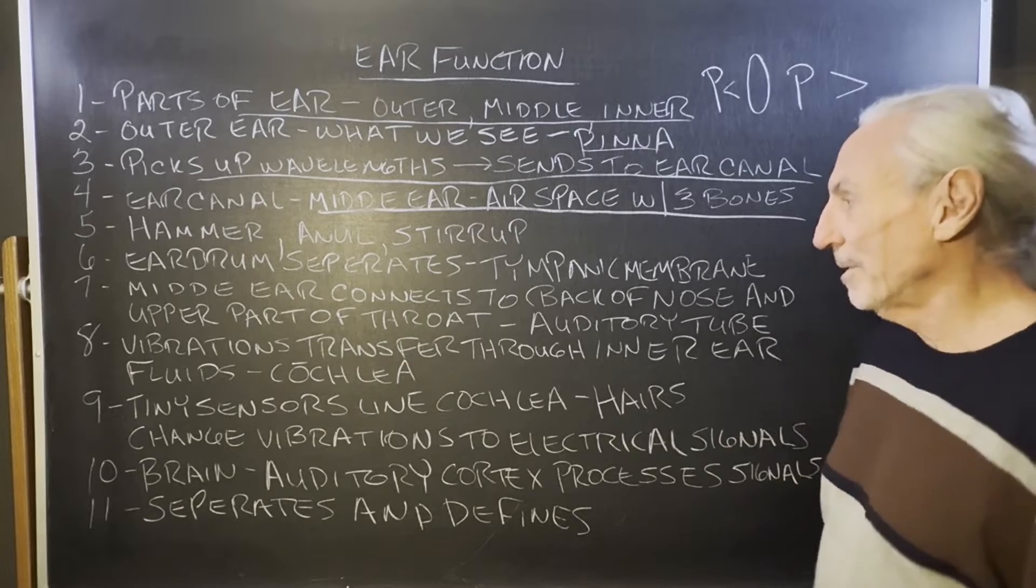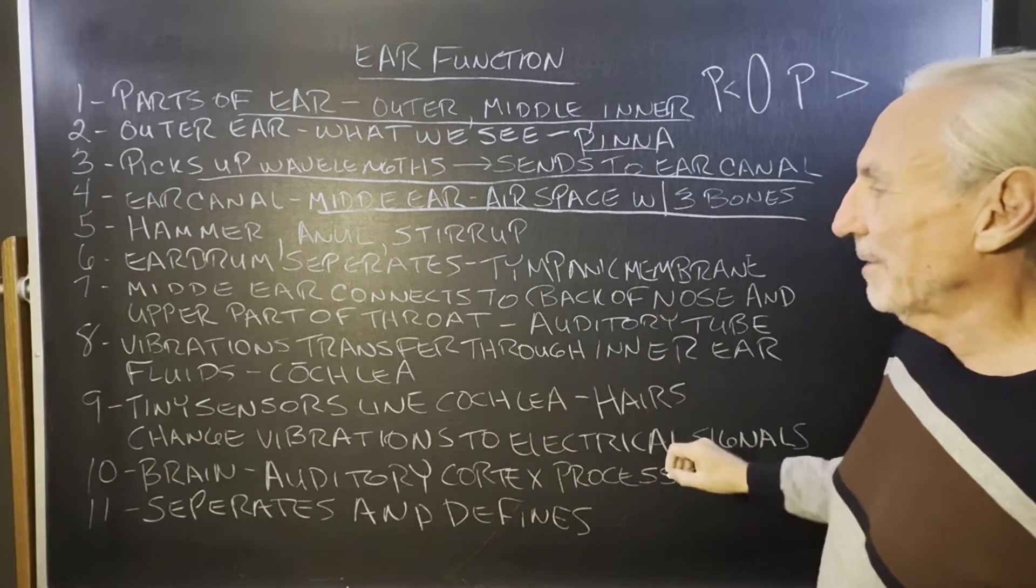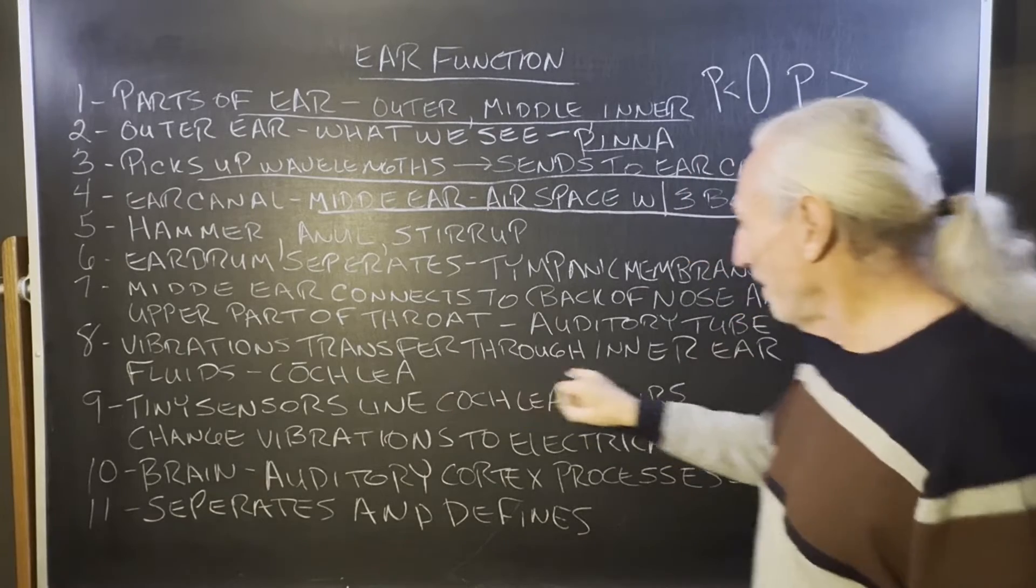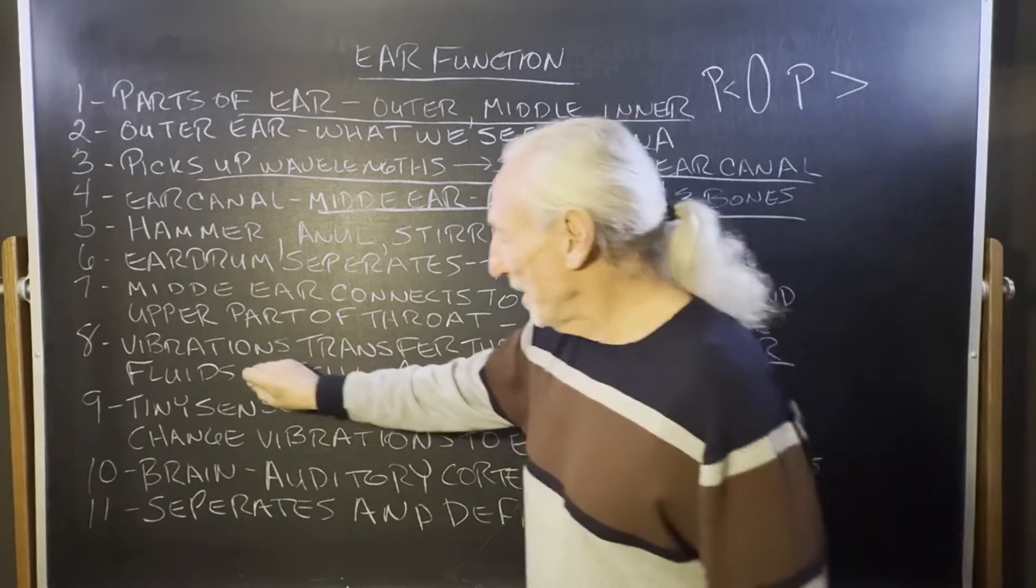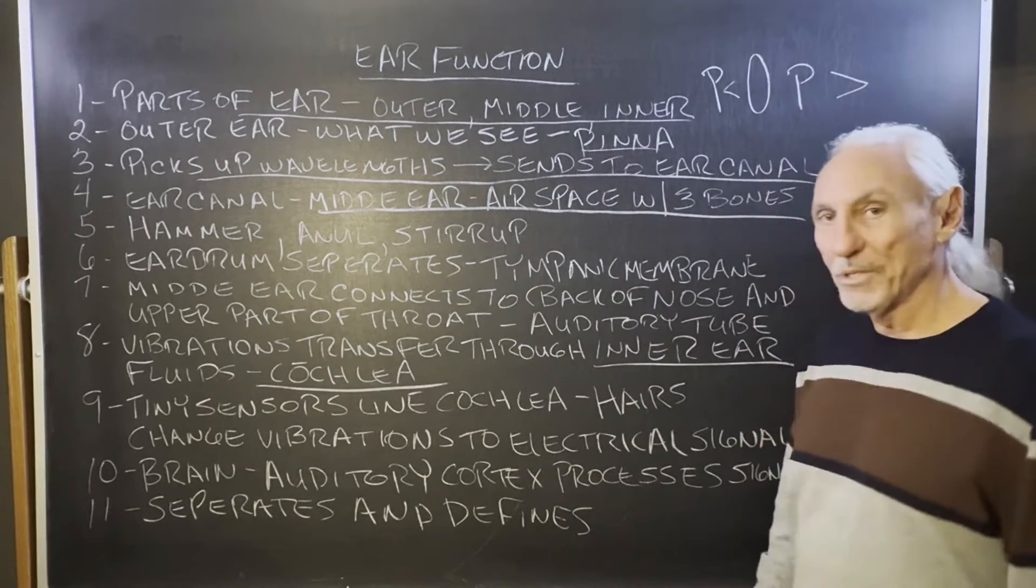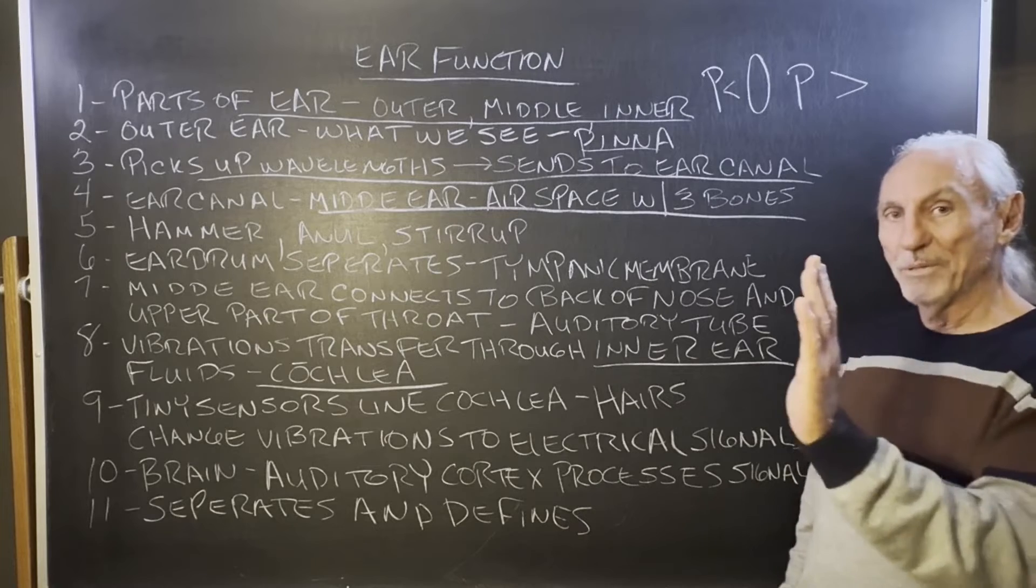So they connect and that controls pressure. We have this vibration transfer through the inner ear and there's fluids. It's the cochlea, that's what it's called. So it starts with air space, bones, and then fluids.